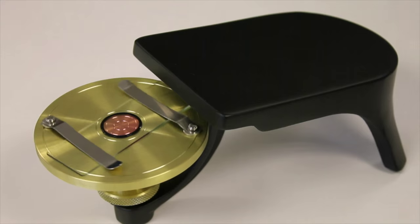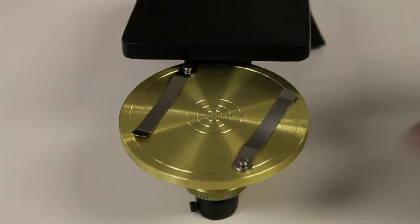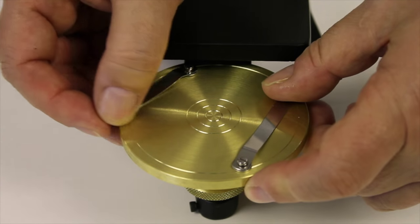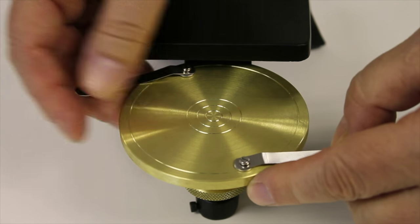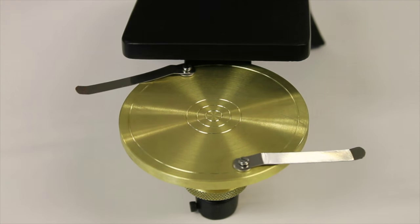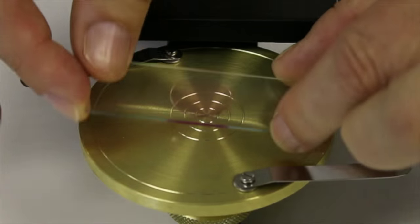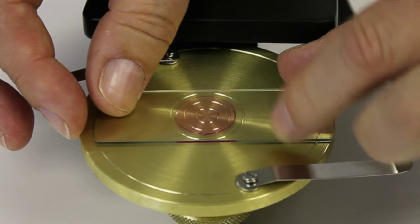The brass table has two slide clips that hold the slide firmly to ensure there is no movement during spinning. There is a series of circular center rings to assist with centering the coverslip around the spin point of the table.